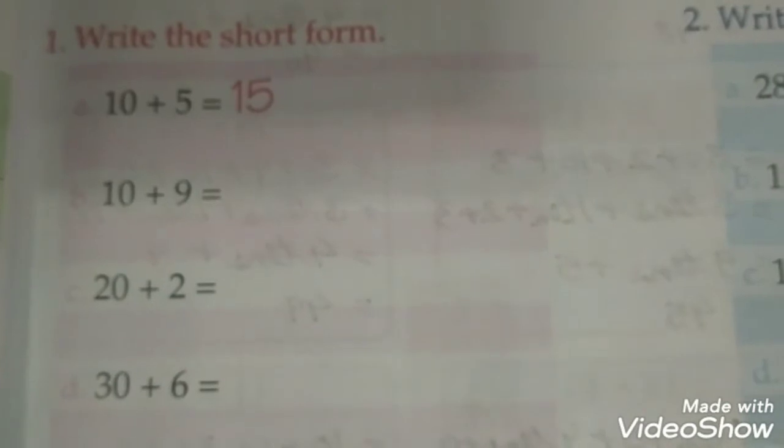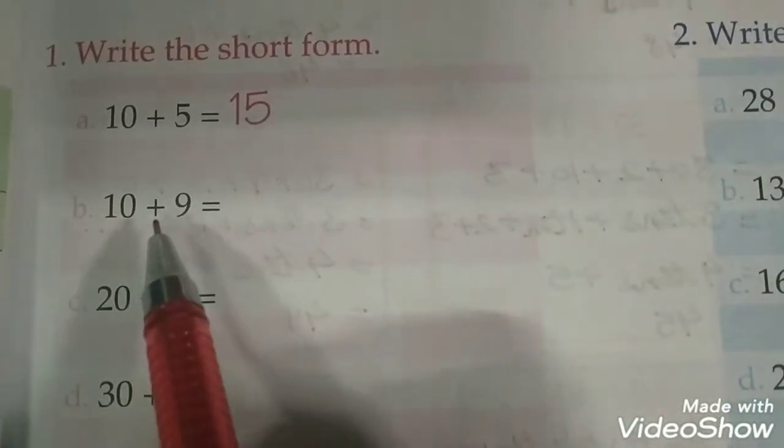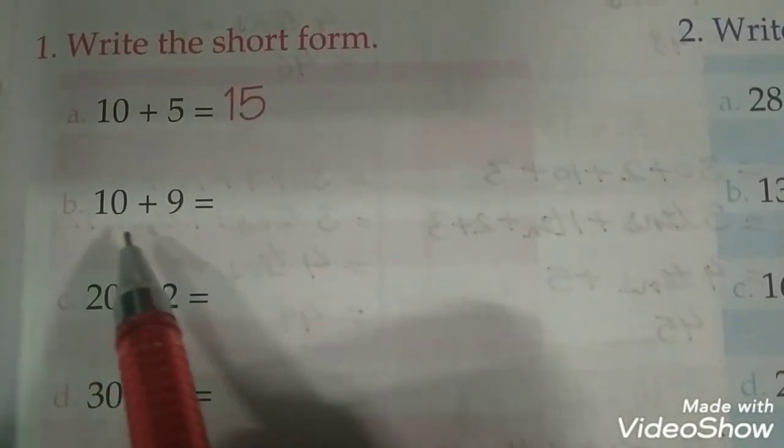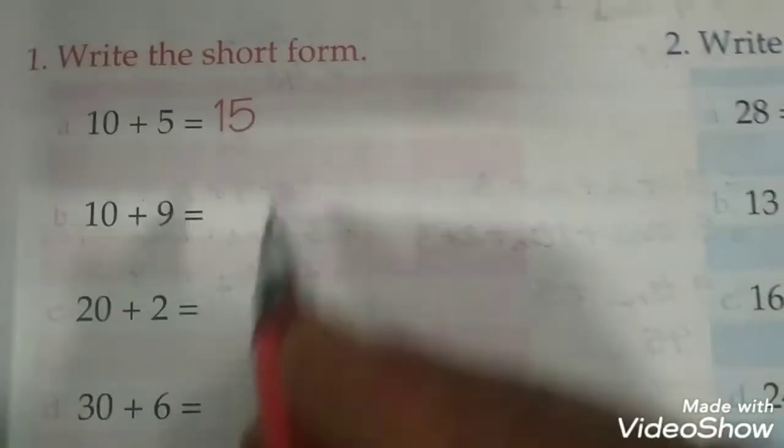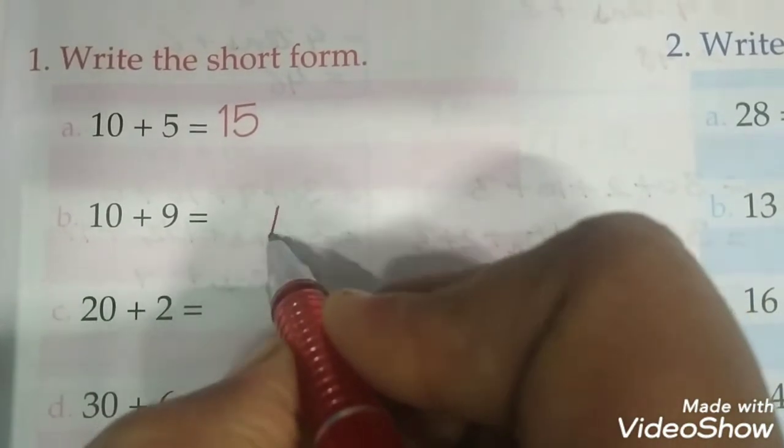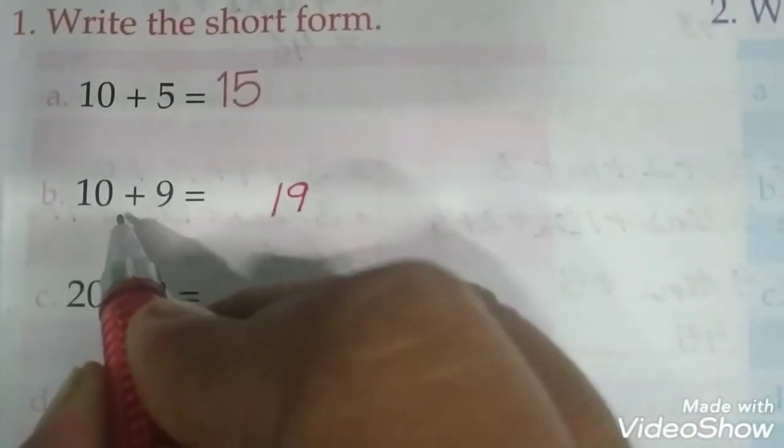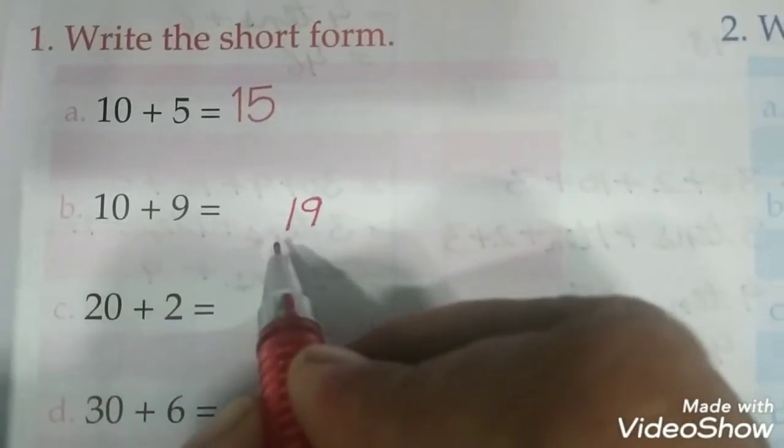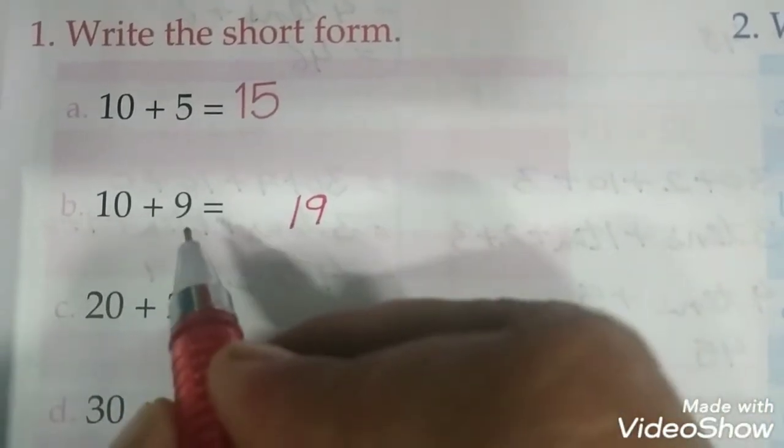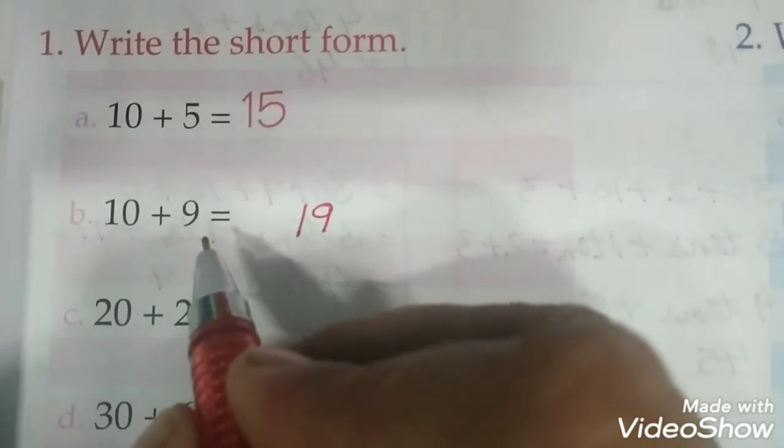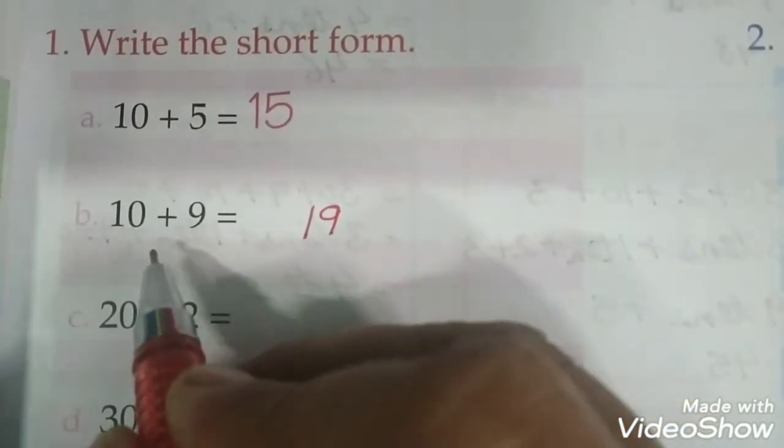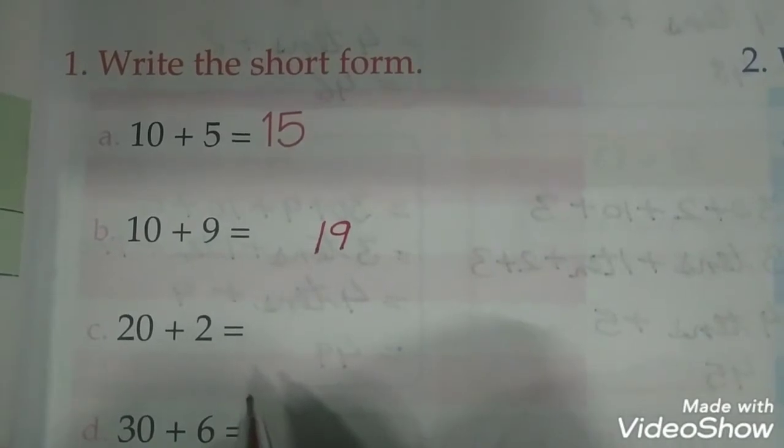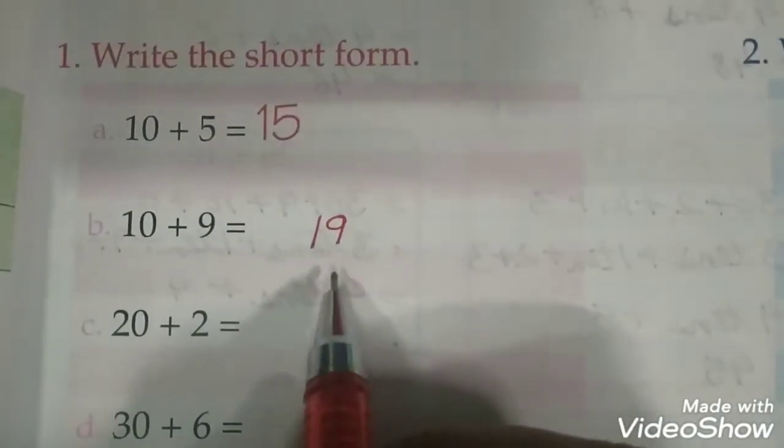So now here we are going to write the numbers in the short form. If you can see, we have been given the expanded form. Expanded form diya hai. 10 plus 9, this becomes 19. I told you kya karna hai aapko? Zero hata kar yahan par yeh wala digit likhte hain. 10 plus 9, 19. Agar aap plus karke bhi dekhen, keep 10 in mind, take out 9 fingers and start counting forward from 10: 11, 12, 13, 14, 15, 16, 17, 18, 19. So you get the answer is 19.